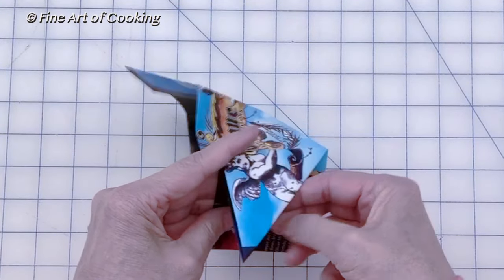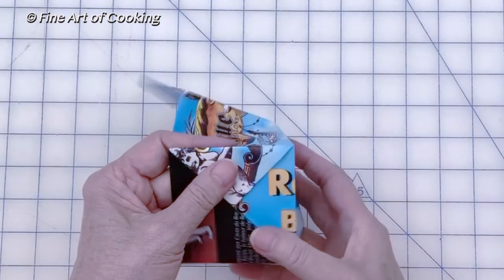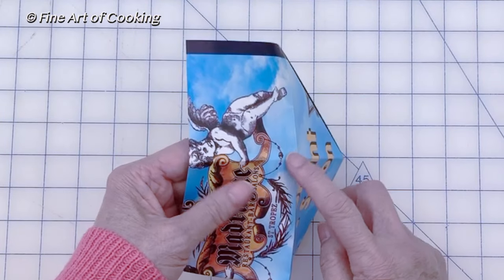Fold the end inside the other half of the triangle to secure it. Repeat the same with the other corner.